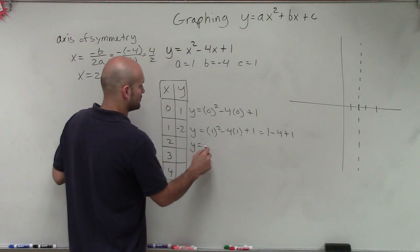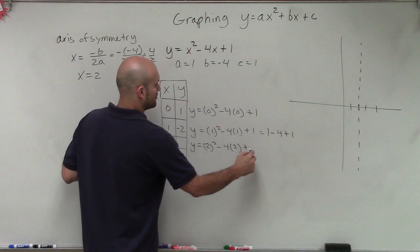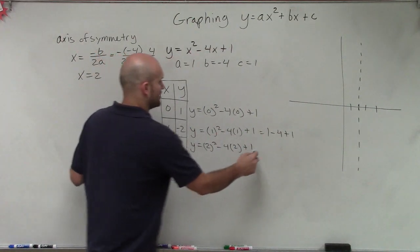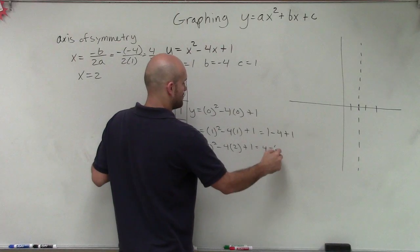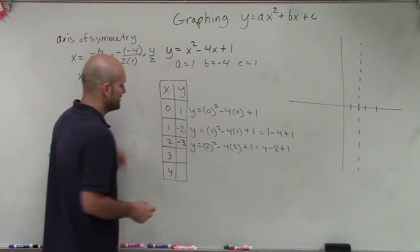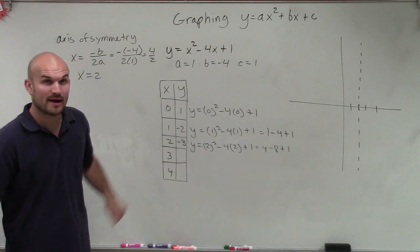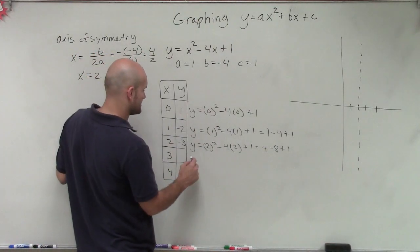Then let's do y equals 2 squared minus 4 times 2 plus 1. So this becomes 4 minus 8 plus 1, that's negative 3. Now just by knowing this, I can guarantee the next two answers are going to be negative 2 and 1 because I started at my axis of symmetry.